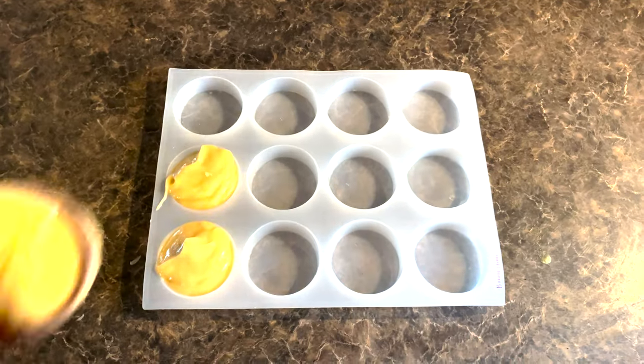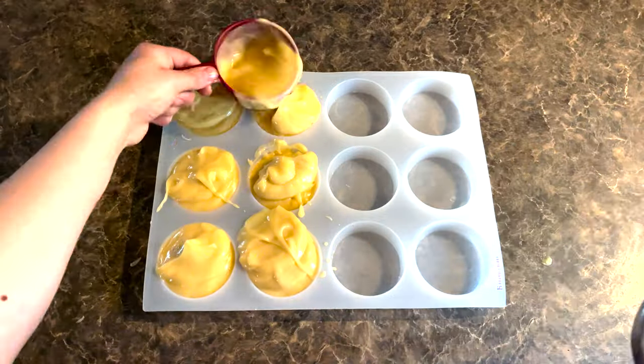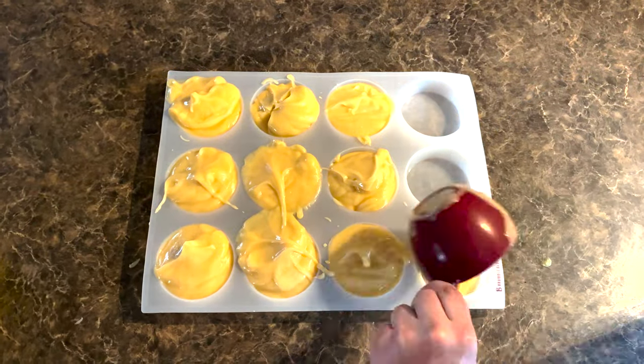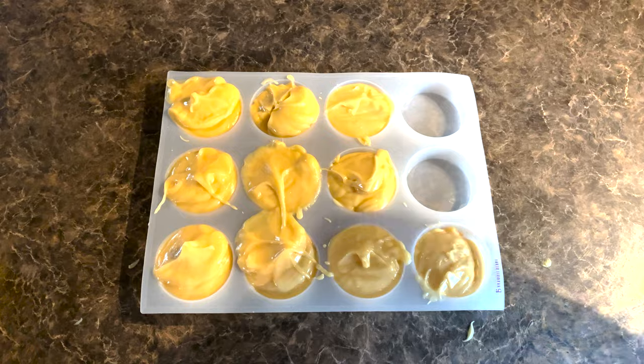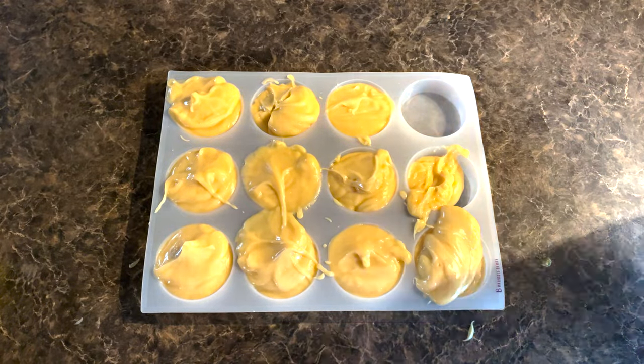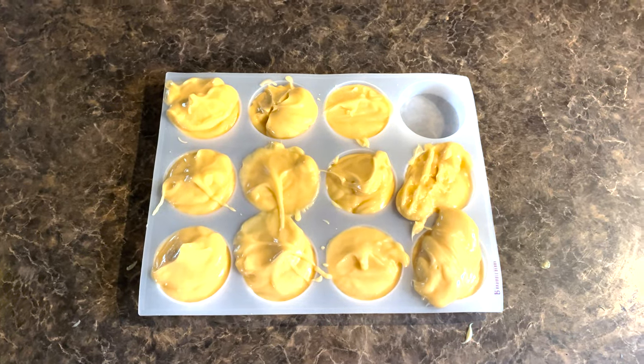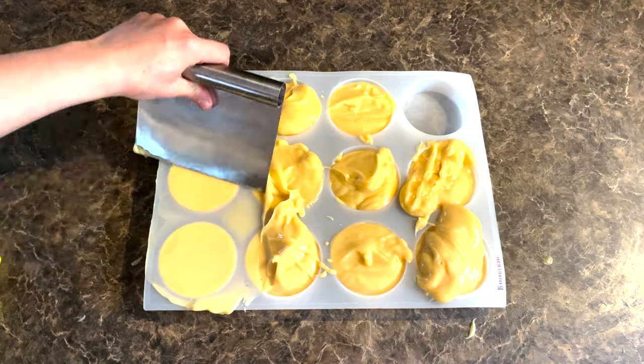For this recipe I will be using circular soap molds, but you can use whatever molds you prefer. I have found that this recipe will yield around 12 soap bars at 4 ounces each.